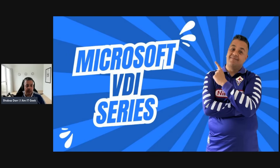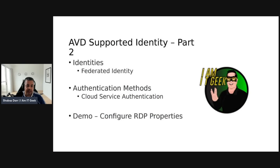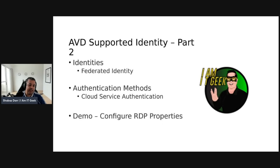This is a Microsoft Cloud VDI series and we are looking at AVD spoiled identities. This is the second part in that topic. Today I'm going to cover federated identity, authentication methods specifically cloud service authentication, and I'm going to do a demo about configuring RDP properties. The demos are two-part because there's a lot of configuration and options with configuring RDP properties.